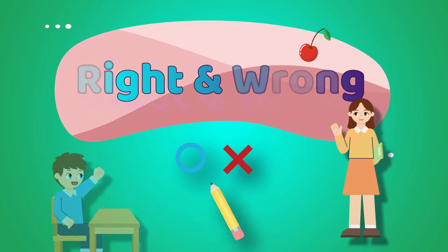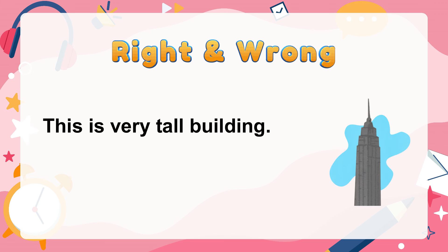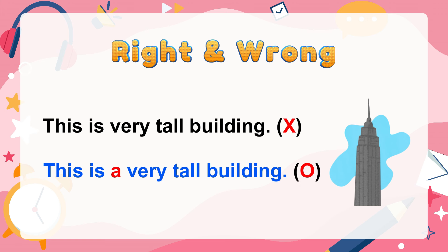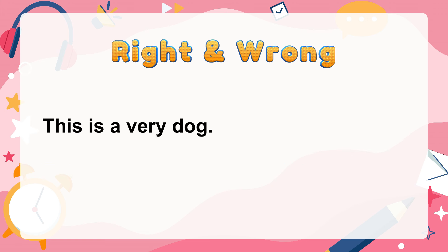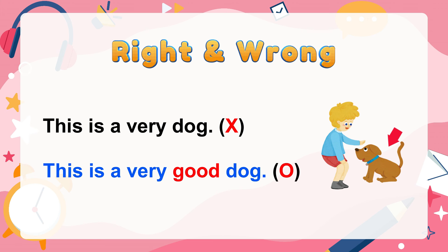Right and Wrong. Now take a look at the right and wrong section. 'This is very tall building' is wrong because there is no article for the word building. It becomes 'a very tall building.' Next, 'This is a very dog' is wrong because we need an adjective to go with very. It becomes 'This is a very good dog.'